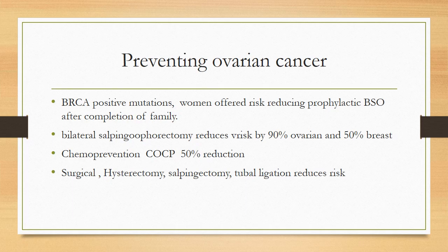How can we prevent ovarian cancer? Women who are positive for BRCA mutations are offered risk-reducing prophylactic bilateral salpingo-oophorectomy after completion of the family. Bilateral salpingo-oophorectomy reduces the risk of ovarian cancer in these women by 90% and also gives a 50% risk reduction of breast cancer. Chemo-prevention using combined oral contraceptive pills gives a 50% reduction of ovarian cancer.